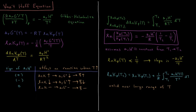The Gibbs-Helmholtz equation tells us that the partial derivative of the standard reaction Gibbs energy divided by temperature, with respect to temperature at constant pressure, is equal to the negative standard enthalpy change of reaction divided by the temperature squared.